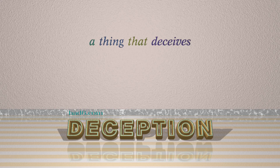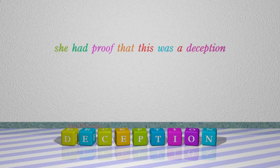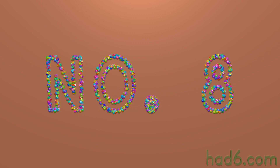Number 7: Deception. Which means: A thing that deceives. For example: She had proof that this was a deception.